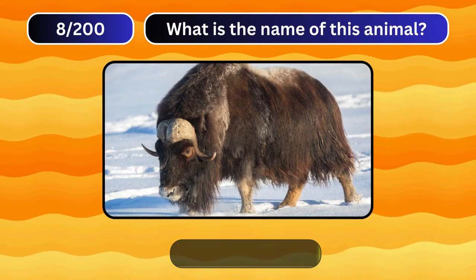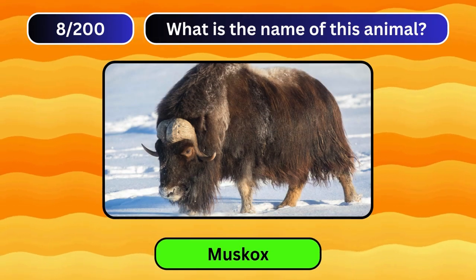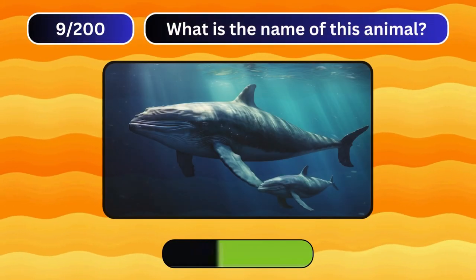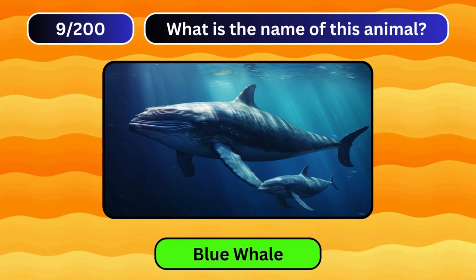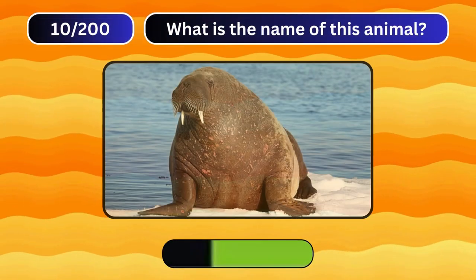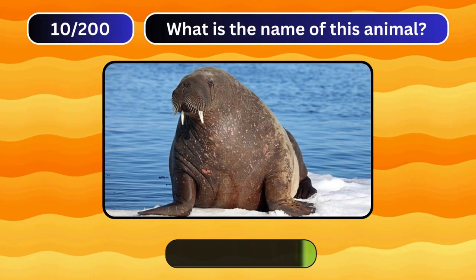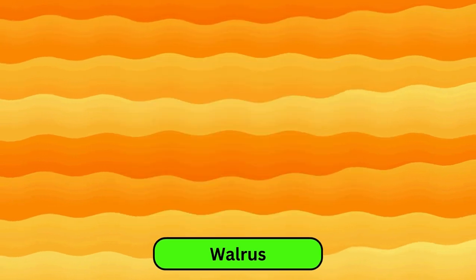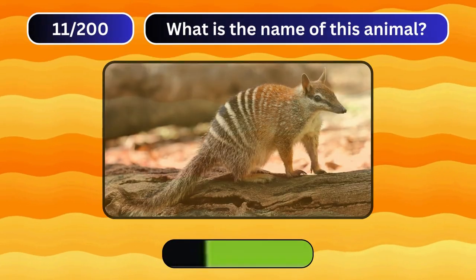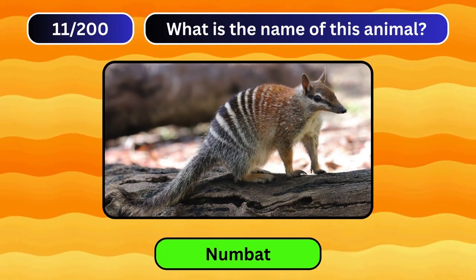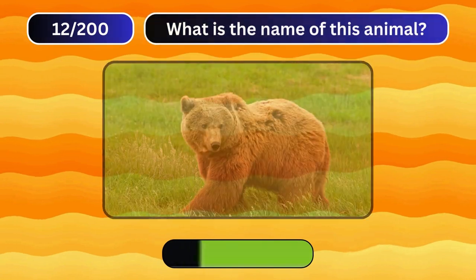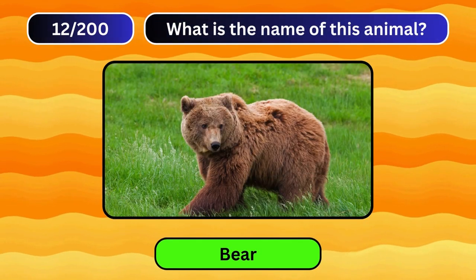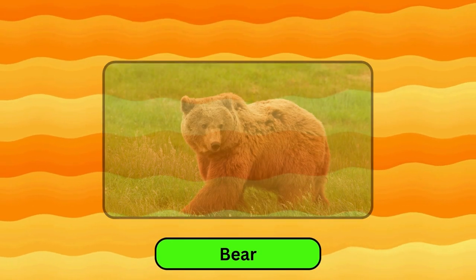Fallow Deer. Musk Ox. Blue Whale. Walrus. Numbat. Bear.